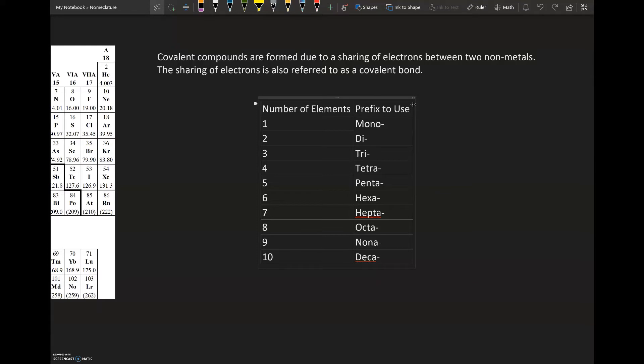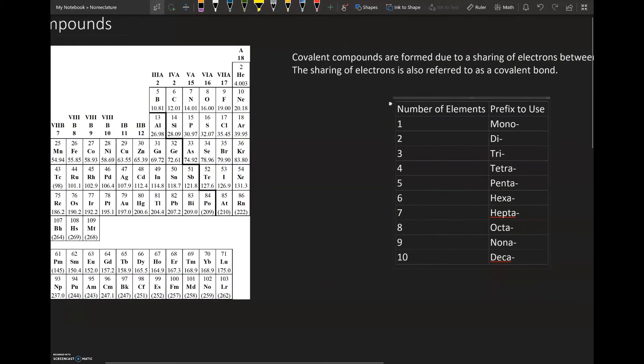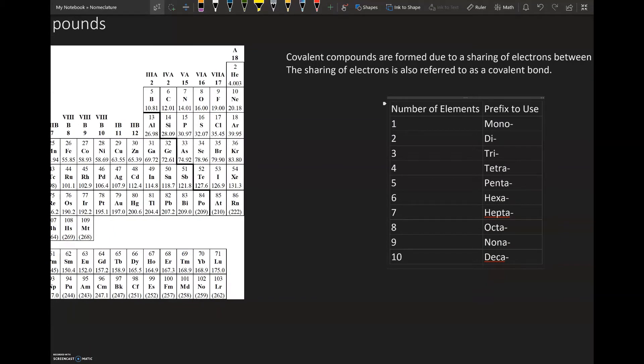Those elements can be the same or they can be different elements. But just in case anybody has forgotten, the non-metals are found on the periodic table on the right side of the staircase.